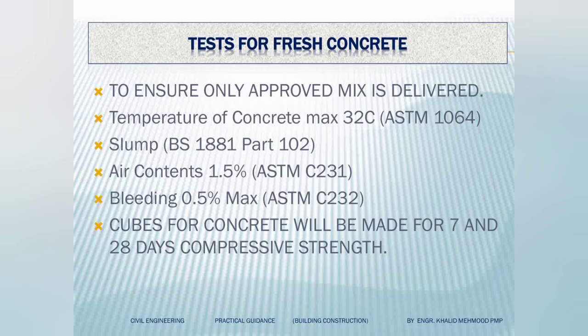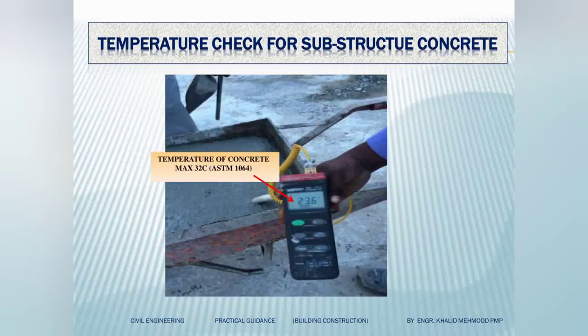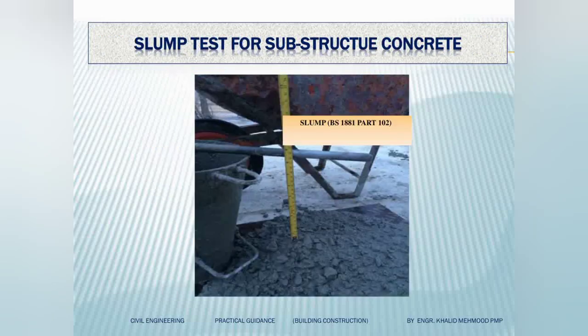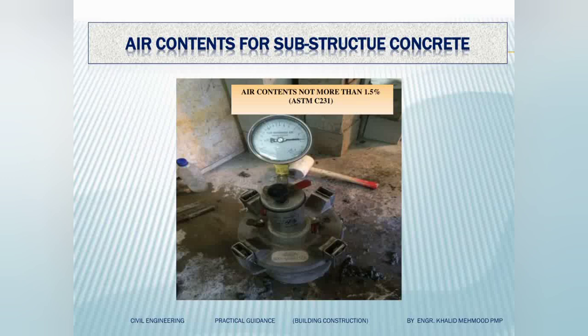Now the different tests for fresh concrete. The first test is temperature — once the concrete arrives on site, we take it in a bucket and check the temperature. It should not be more than 32 degrees Celsius. The next test is the slump test, which tells you about the workability of the concrete and whether the concrete quality is good. We also check air content, but air content is normally only checked in the lab, not on site. At site, only temperature and slump are checked.